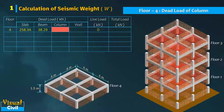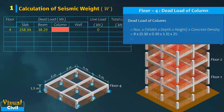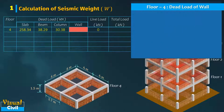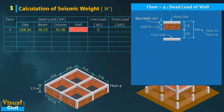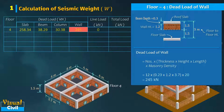Next, compute the dead load of column. Total number of columns are 9 and their size is 300 mm by 300 mm. Here, 1.5 meter height of the column below the floor will be considered for the column dead load. After calculation, we get dead load of column equal to 30.38 kilo newton. Next, compute dead load of wall. Here, 1.5 meter height of the storey below the floor will be considered for the wall dead load. The actual height of the wall to be considered is equal to 1.2 meters after deducting the depth of beam, assuming the wall is up to the beam bottom as shown in figure. There are 12 number of walls with clear length of 3.7 meters — any opening in the wall is ignored. After calculation, the dead load of the wall is equal to 245 kilo newton.